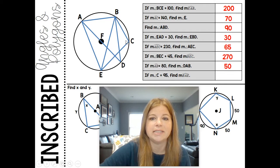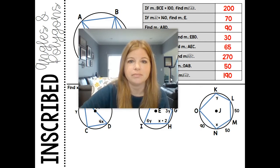If angle C is 95, find arc BAE. Angle C opens up directly to arc BAE. If this is 95, then the arc is double it, which is 190.